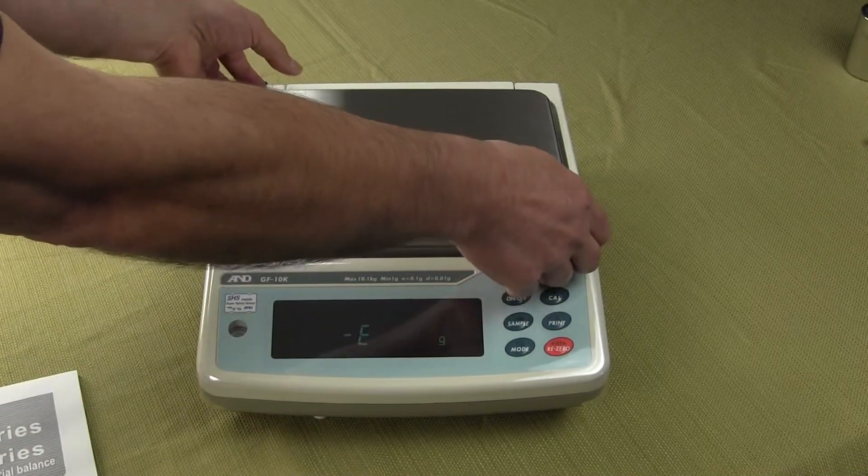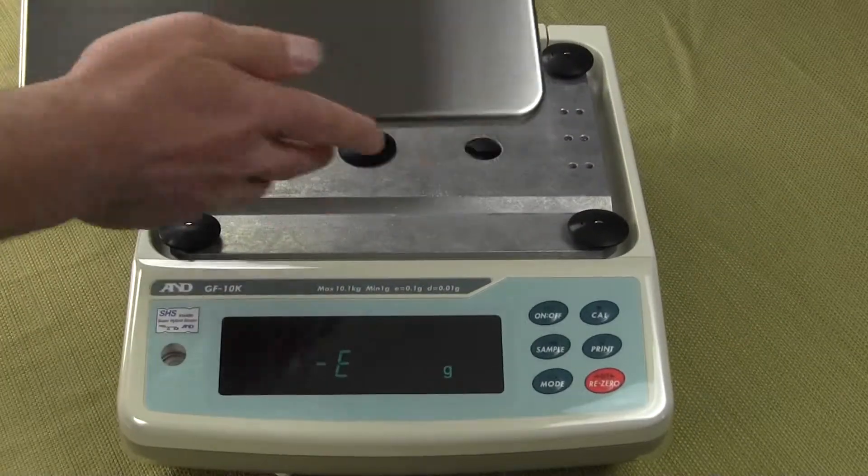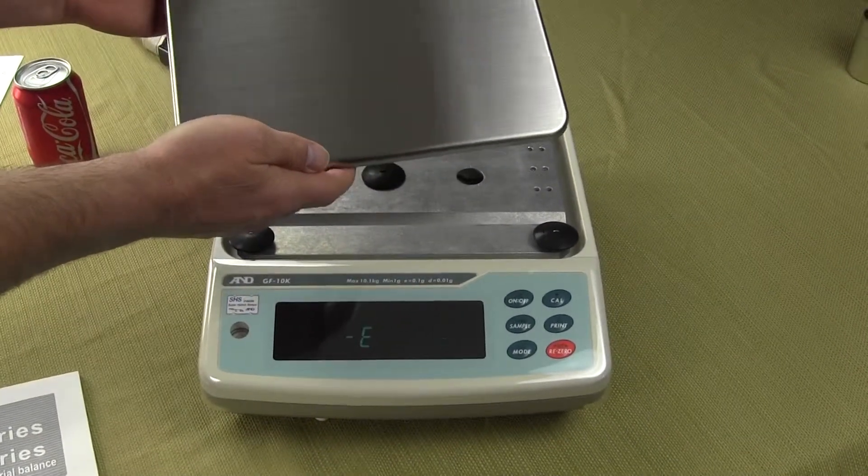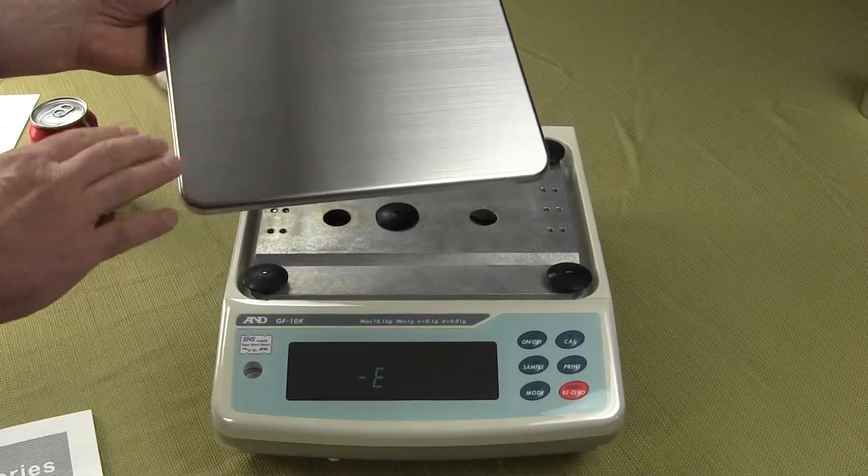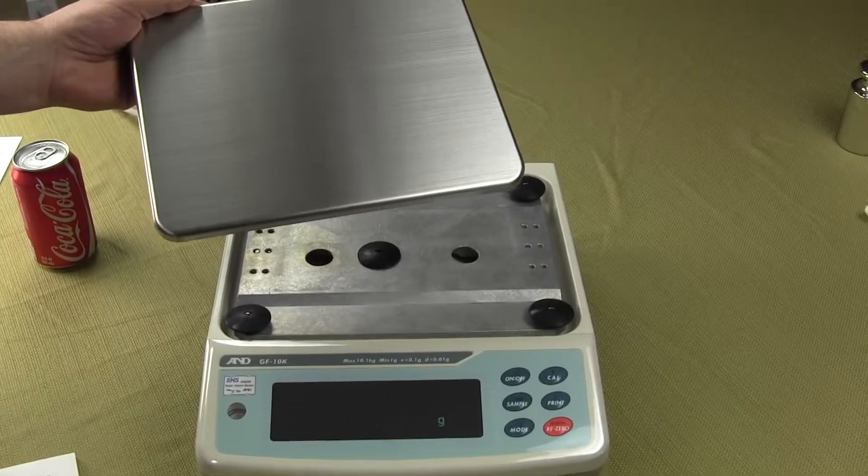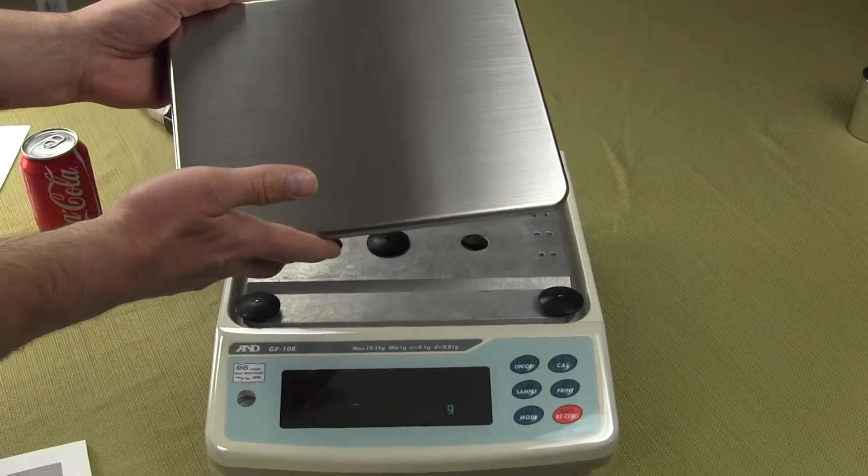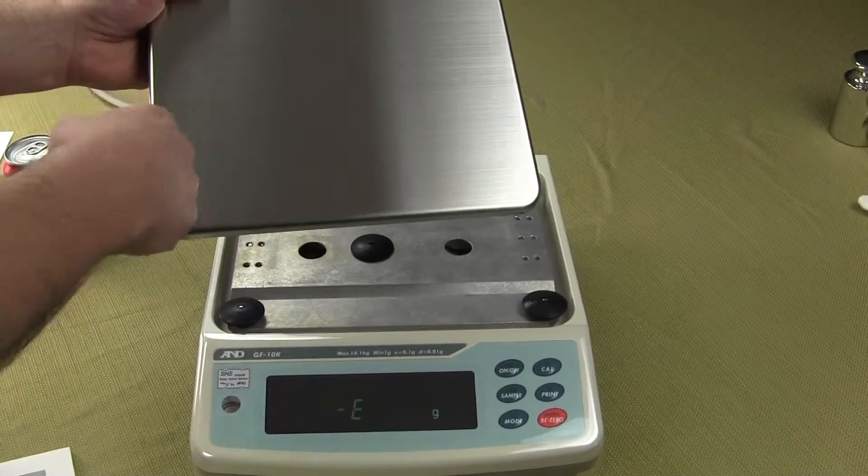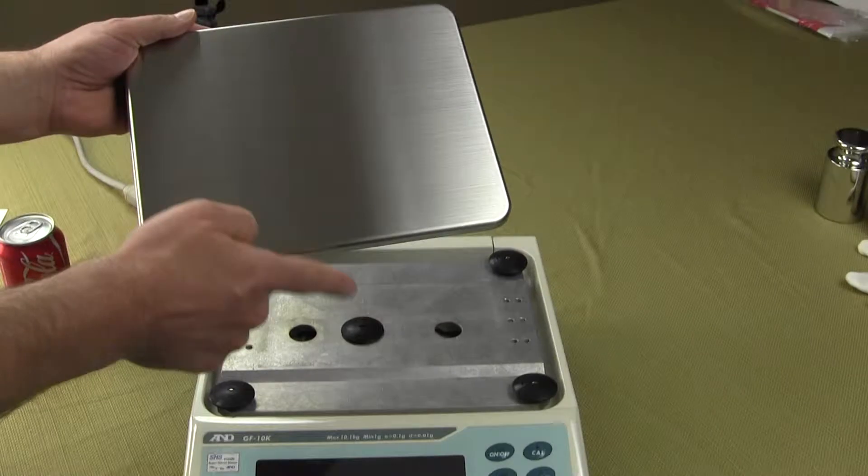You have a nice stainless steel removable platform so you can clean and wash this down at any time. This is an amazing scale because of the fact that this is 10,100 grams by a hundredth of a gram, you get a very large platform. It's pretty unique. Those measurements again, we're looking at 10.6 by 8.3 inches.